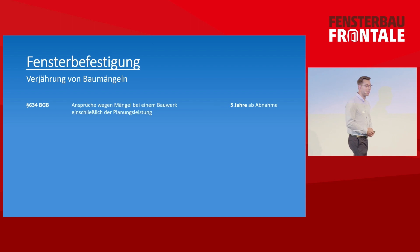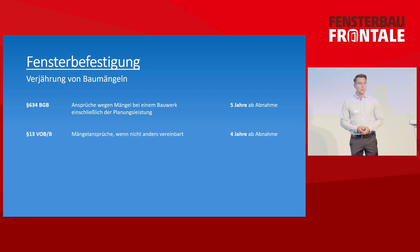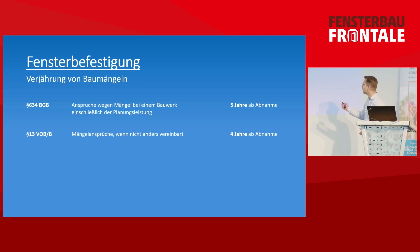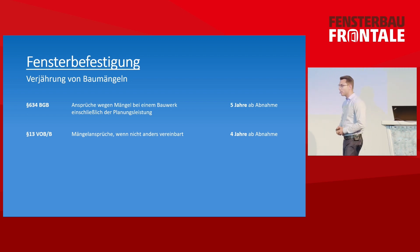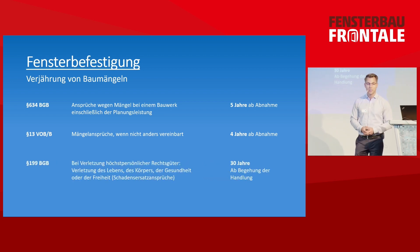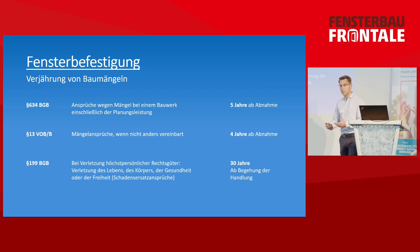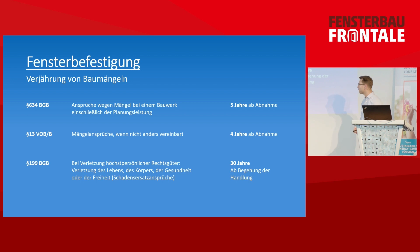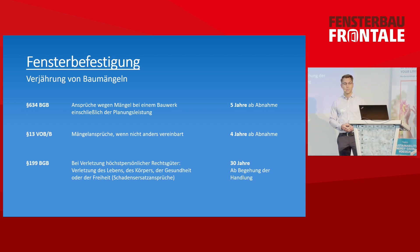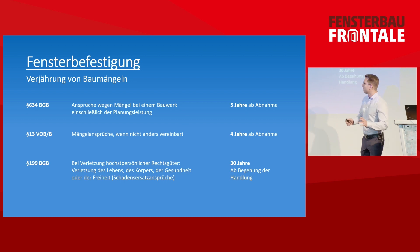We start with a legal slide. You can either work in line with BGB, which gives you a five-year statute of limitations, or VOB, which gives four years. But there's one paragraph that always holds true: §199 BGB states that if your body, life, or livelihood is endangered, the window builder is responsible for 30 years. So if after 29 years a window falls out and injures a child, you are still liable.